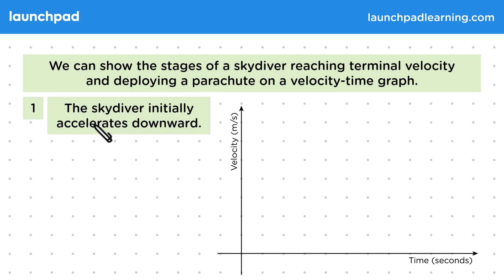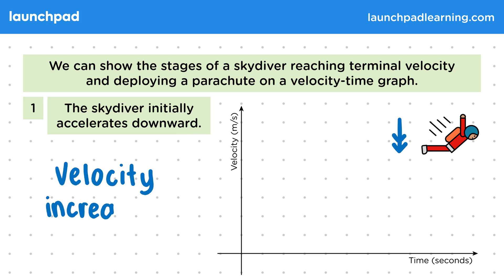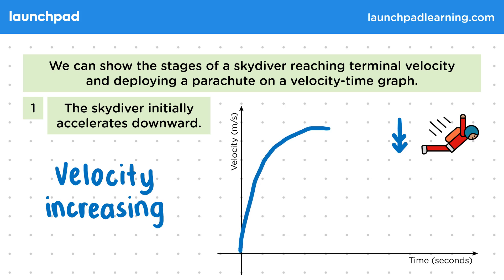First, the skydiver initially accelerates downward. This is because their weight is greater than air resistance, so there is a downward acceleration, and hence the velocity is increasing. Since the velocity is increasing we'll want to draw the graph with a positive gradient. But remember that air resistance increases as speed increases, so the acceleration and hence the gradient decreases over time. Overall we'll want to draw a curve where the velocity levels out.